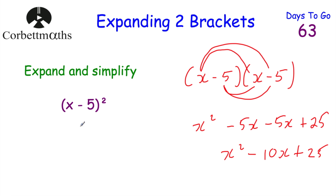So to expand and simplify (x − 5) squared, because it's squared we multiply it by itself — we write the bracket out beside itself and then expand. Multiply both terms in the second bracket by x, then by minus 5, and simplify to get the answer.